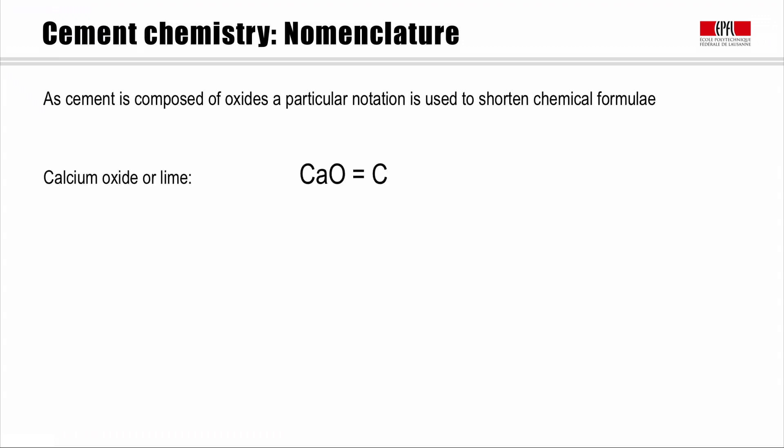Now, cement chemists are a little bit lazy, and because we're generally dealing with oxides, we have a shorthand to shorten the chemical formula. Now, you need to know this, but it is really quite simple. Basically, calcium oxide or lime, which is written CaO in full chemical notation, becomes simply C.